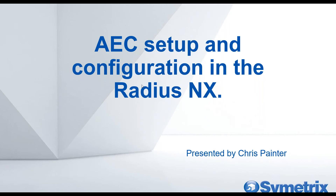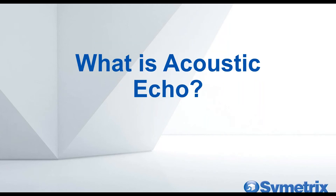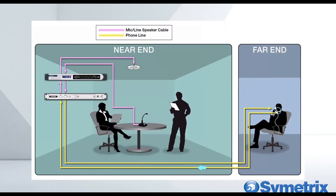Let's launch right into it. Acoustic echo occurs in a conferencing system when the far end caller comes out of the speakers in the room and gets picked up by the microphones, then gets transmitted back to the far end. That signal is a delayed version because of the acoustic echo — the delay coming through the wires, out of the speakers, picked up by the microphones, and going back to the far end. The far end caller hears themselves back like an echo.